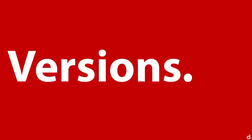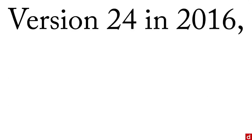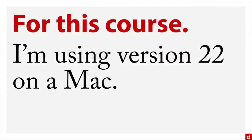Version 1 came out in 1968, when it was called Statistical Package for the Social Sciences, SPSS. Version 24 came out in 2016, and now it's called IBM SPSS Statistics. For this course, I'm using version 22 on a Macintosh computer. There haven't been any extraordinarily major changes between versions 22 and 24, and everything I show you will work in almost any other version of SPSS.